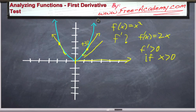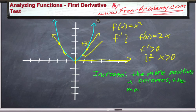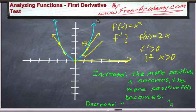So I've used some terms here, but I haven't defined them. Increasing is exactly what you think it is. The more positive x becomes, the more positive f of x becomes. Decreasing is the same thing, only it's the more negative f of x becomes.